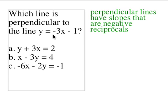So a negative reciprocal of negative 3 is going to be a positive 1 over 3. So a positive 1 third.